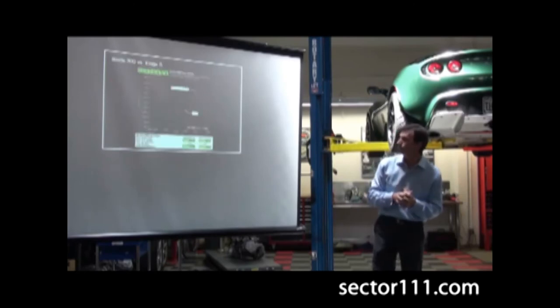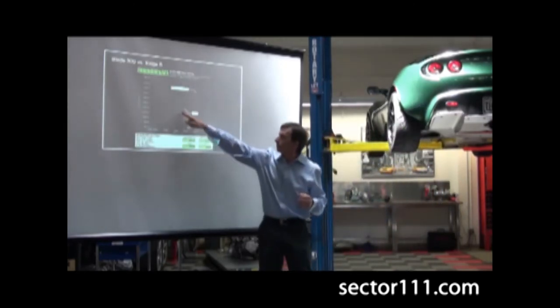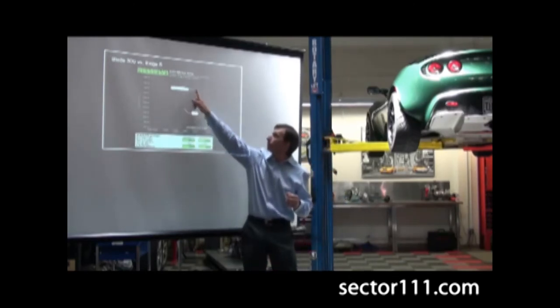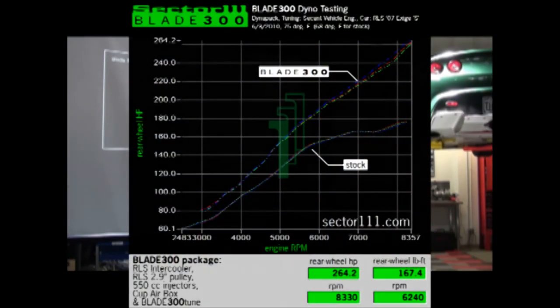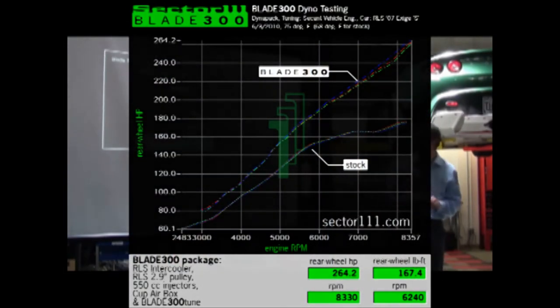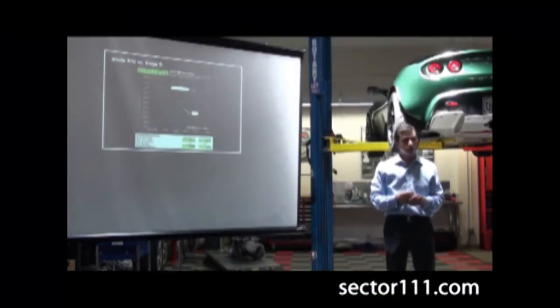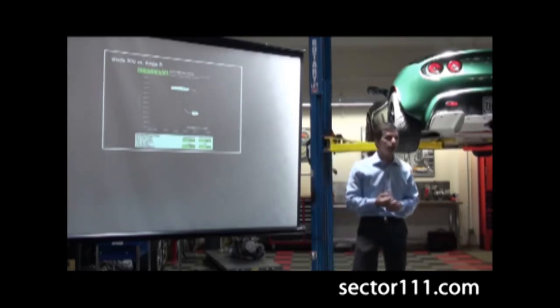Here's the dyno graph. This is the same stock line we're comparing it to, and this is our new results. This is the Blade 300. At 8,300 RPM we're making 264 to the wheels. That's super consistent, 91 octane, and it's a really nice package. We worked pretty hard to keep that in a nice safe zone, to keep that detonation out of the picture. And it's really nice to drive.